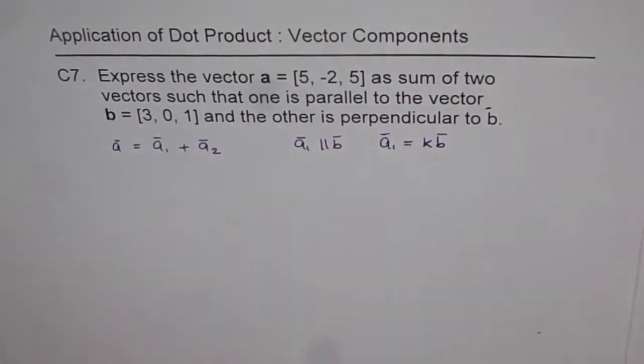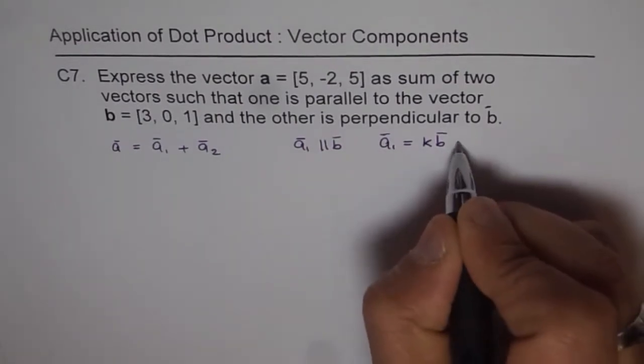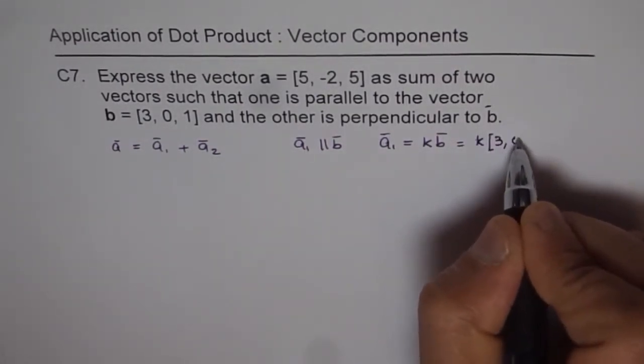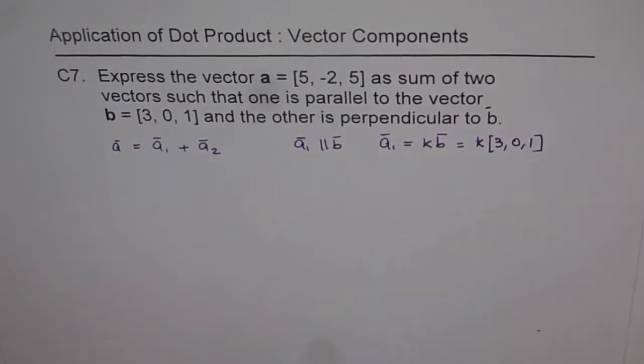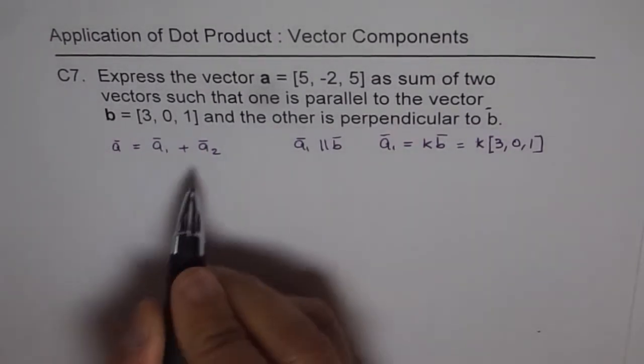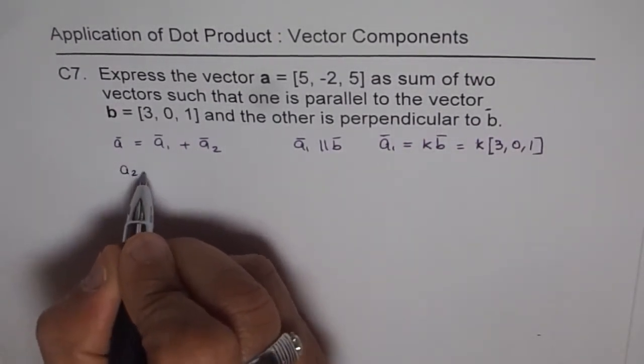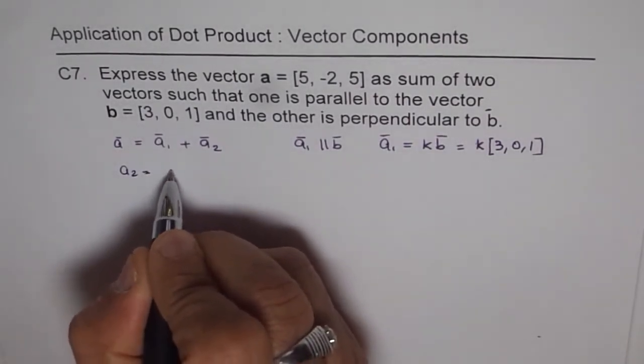So that is the relation. So we can say a₁ equals k times [3, 0, 1]. So that is the value of a₁ for us.